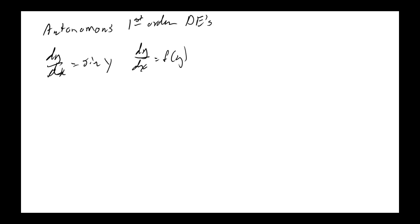Does this happen frequently? Let's go back to the mathematical models from Section 1.3. The population equation dp/dt equals kp — t doesn't show up. Radioactive decay: dA/dt equals kA — independent variable doesn't appear. Newton's law of cooling: dT/dt equals k(T minus ambient temperature) — no time on the right side.